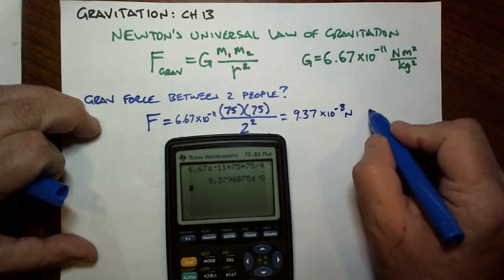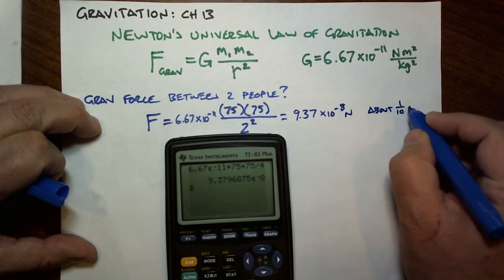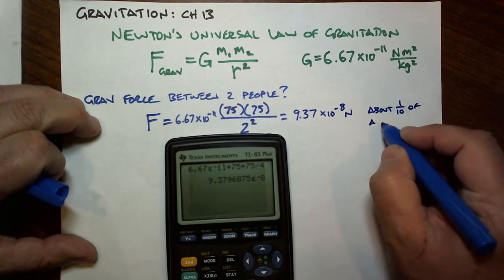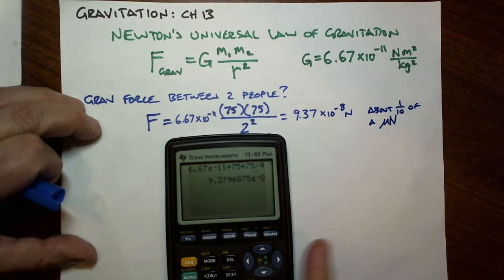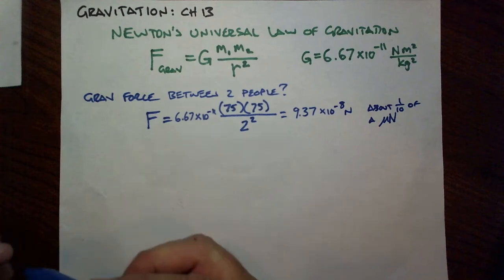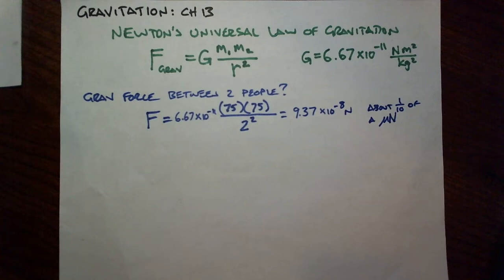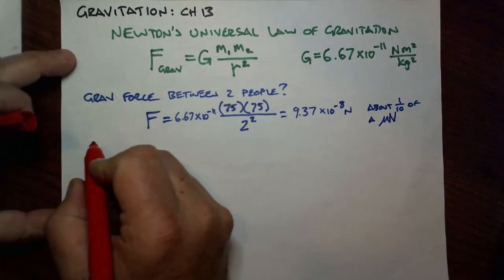This is going to be 9.37 times 10 to the minus 8 newtons, or about one-tenth of a micronewton. Yeah, people are not gravitationally attracted to each other. But that does remind me of one of my favorite jokes. How do you know when you've gotten to be too fat? The answer is, you walk down the street and small children go into orbit around you.